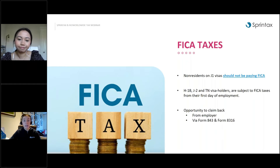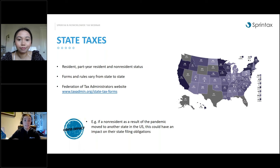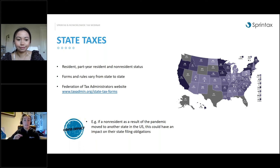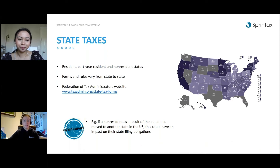Sprint Tax can assist you with FICA refund forms if your employer refuses. Double-check your W-2 for the fields showing Social Security and Medicare withheld — if you see tax withheld there and you're a non-resident on a J1, reach out to your employer. On state taxes: state tax rules and residency rules differ from state to state, separate from the federal residency rules we've been discussing.